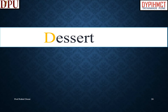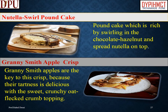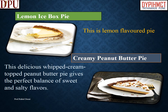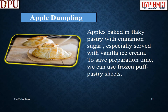Desserts of North America: Nutella swirl pound cake is enriched by swirling in chocolate hazelnut spread. Granny Smith apple crisp features tart apples with a sweet, crunchy oat-flecked crumb topping. Lemon box pie is a lemon-flavored pie. Creamy peanut butter pie is topped with whipped cream and gives a perfect balance of sweet and salty flavors. Apple dumplings are apples baked in flaky pastry with cinnamon sugar, especially served with vanilla ice cream — using frozen puff pastry sheets to save time.